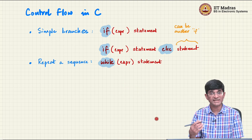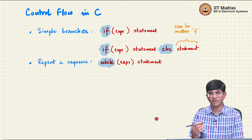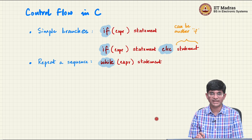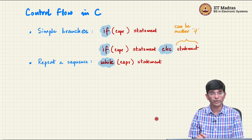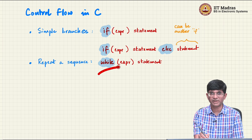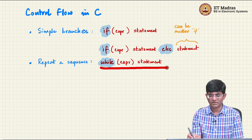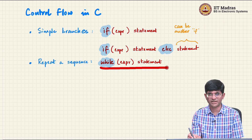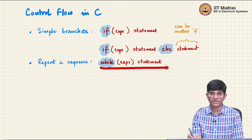The if statement handles simple selection — one of the things structured programming requires. If and if-else take care of selection. Now we want iteration. For iteration, C provides the while keyword, which allows you to construct: while some expression — that is, while a condition is satisfied — execute some statement.